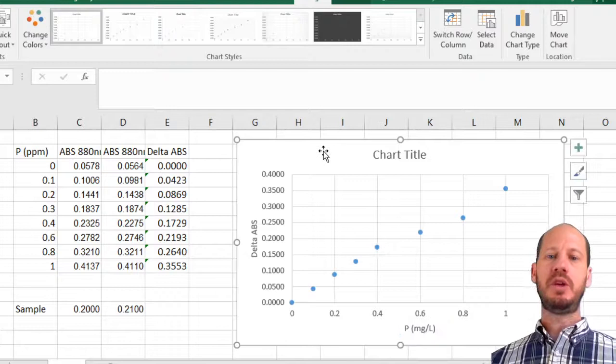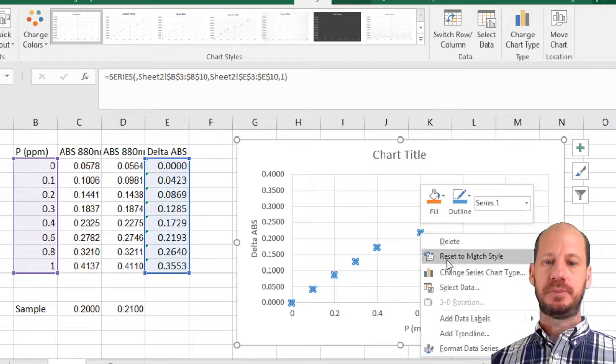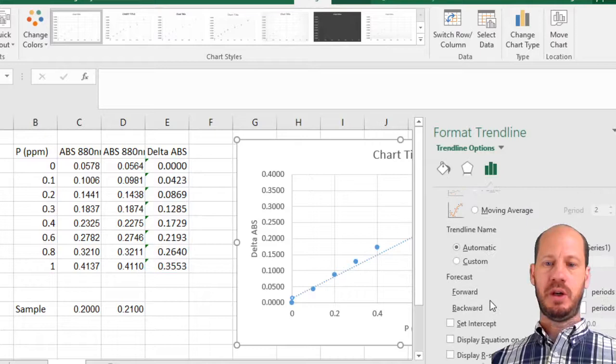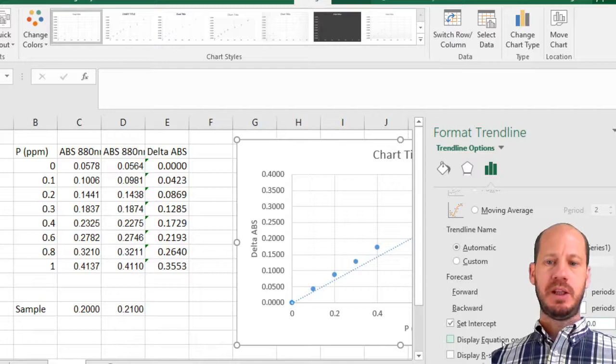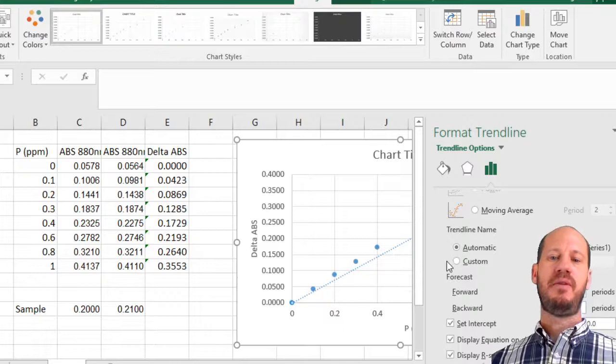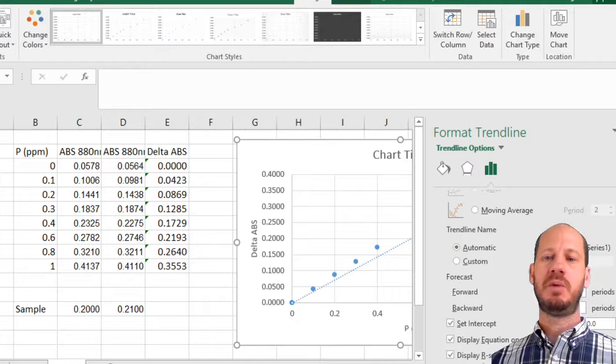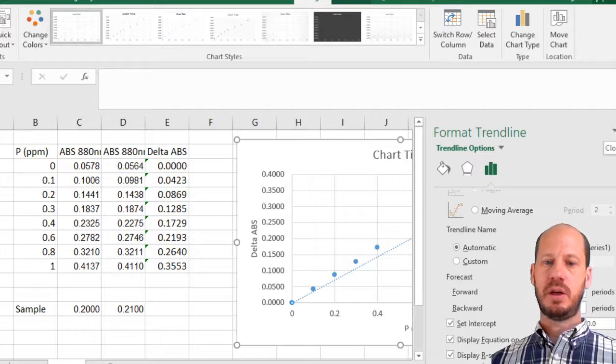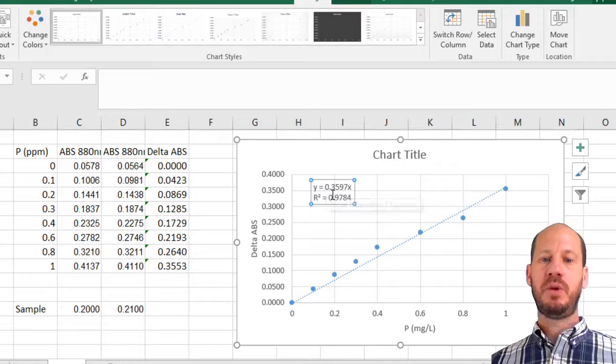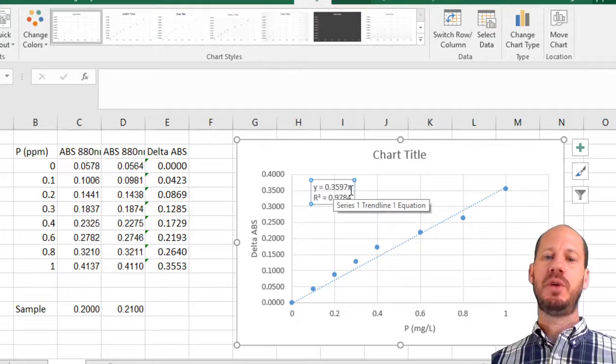How do we use this to calculate the concentration in our samples? We need to add a trend line. You need to fit a line to this curve and know the equation of that line. We're going to choose linear. Set intercept at zero, display the equation on the chart, and display the R-squared value. The R-squared tells you how good your fit is. If it's closer to one, you're more precise. If you're becoming below 0.95, it's becoming a little bit strange and you cannot trust it too much.